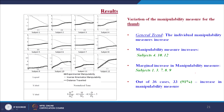Finally, the manipulability measure variation for the thumb also shows the general trend of an increase. Subjects 4, 10 and 12 have only an increase in manipulability measure, and marginal increase is observed for subjects 1, 3, 7, 8 and 9. Out of 36 cases, 33 cases — that is 91 percent — have an increase in the manipulability measure.